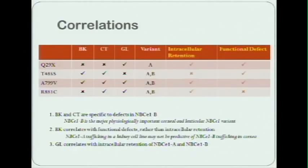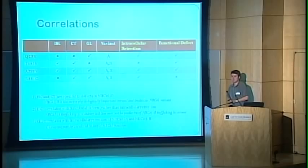The third interesting correlate is that glaucoma is specifically associated with intracellular retention of NBCe1 and NBCe1B, rather than functional defects. We can see that T485S, which is as dead as a doornail, but makes it out of the plasma membrane perfectly well, does not manifest a glaucoma, which suggests that glaucoma is probably unrelated to loss of NBC1 function per se.